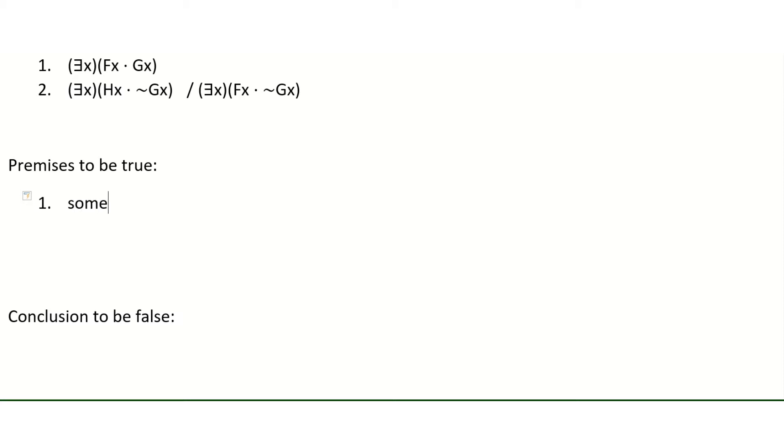So first premise is some Fs are Gs. That'll help us make sure that we get the form right. And then the second premise is some Hs are not Gs. And then, of course, our conclusion is some Fs are not Gs. You don't always have to translate into ordinary language, but I find that it helps you get the form correctly.